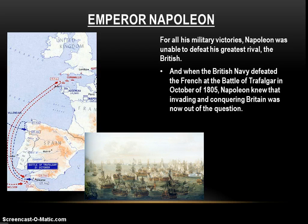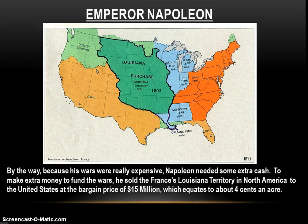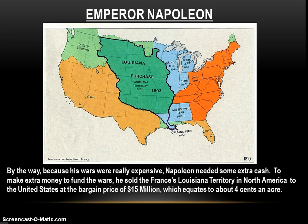With that option off the table, he had to shift strategy in dealing with the British. And because his wars were very expensive, Napoleon needed extra cash. So he decided to sell France's colonial territory in North America to the United States — the Louisiana Territory — at the bargain price of $15 million. The U.S. had sent ambassadors to negotiate the purchase of just New Orleans, but Napoleon offered the entire Louisiana Territory for $15 million, roughly four cents an acre. The United States doubled its territory. And this would not be the last time Napoleon influenced American history.